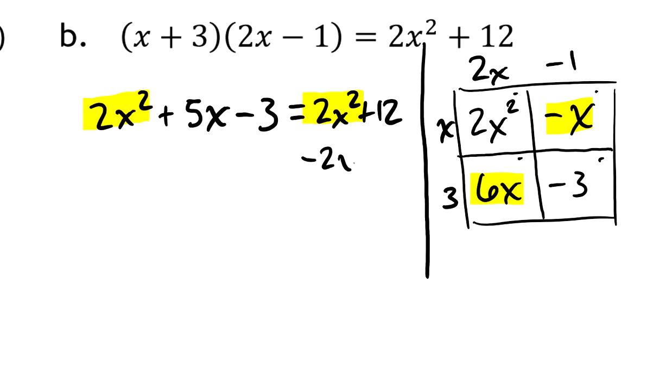So now one of the things that's super nice is I can see that I have the same 2X squared on each side. Both the left and the right, they're identical. They're both positive. So I'm going to take away 2X squared from each side and rewrite.